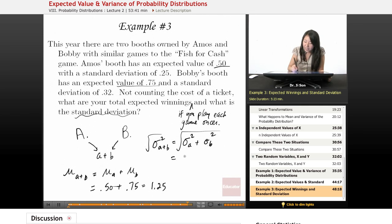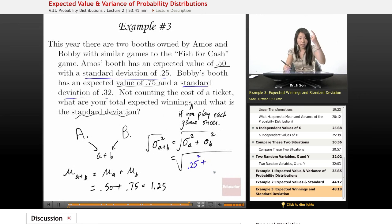So you'll have to take the square root of Amos's standard deviation. I'll show it in blue, right? So in order to find variance, I have to square that, right? I don't need these parentheses anymore. I have to square that first and add it to Bobby's standard deviation squared in order to get variance.